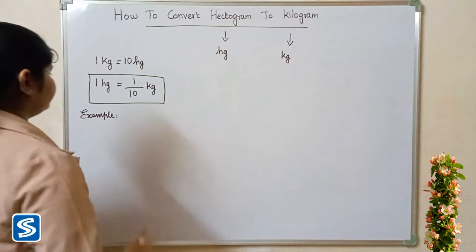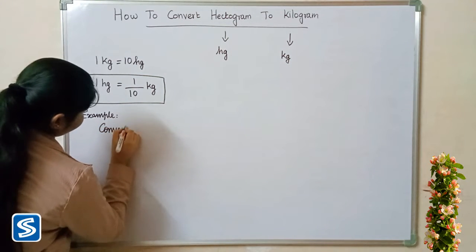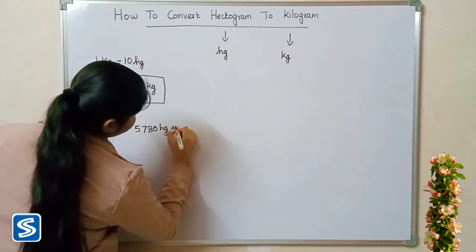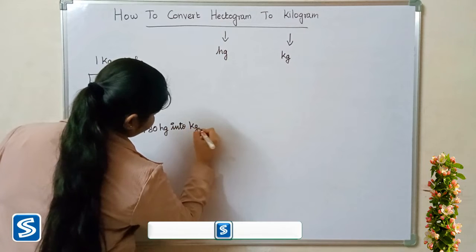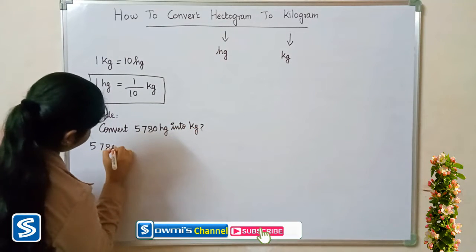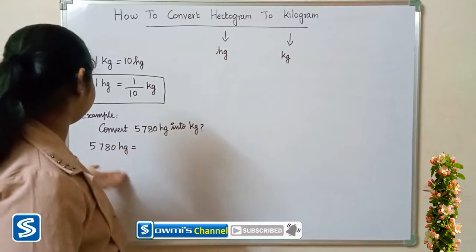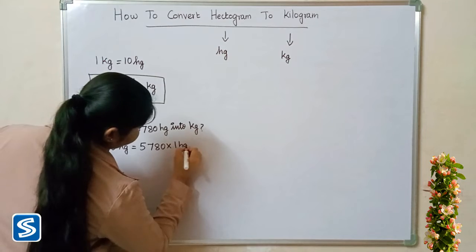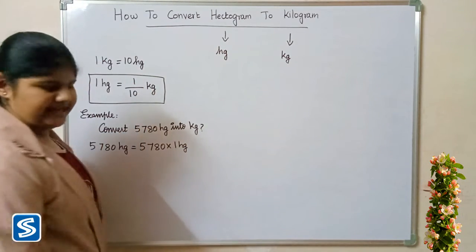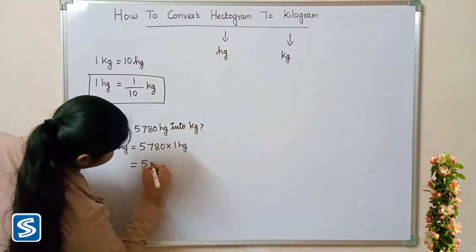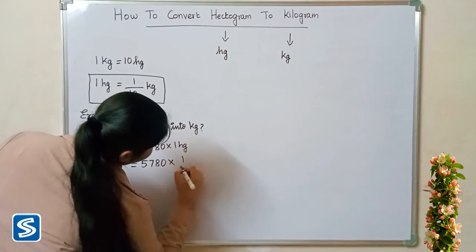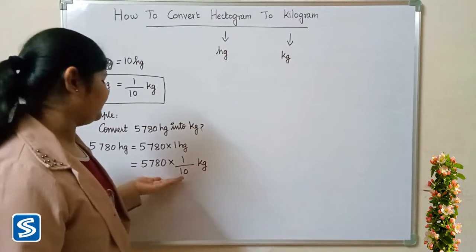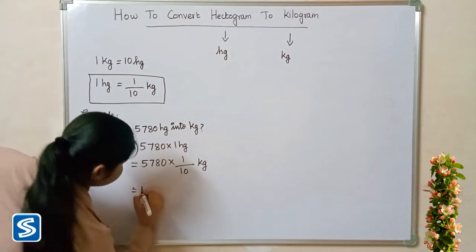For example, convert 5780 hectograms into kilograms. 5780 hectograms can be written as 5780 multiplied by 1 hectogram. Now we substitute 1/10 kilograms in the place of 1 hectogram, so 5780 multiplied by 1/10 kilograms. 5780 multiplied by 1 will be 5780, so we get 5780 divided by 10 kilograms.